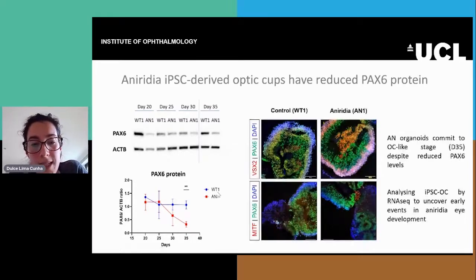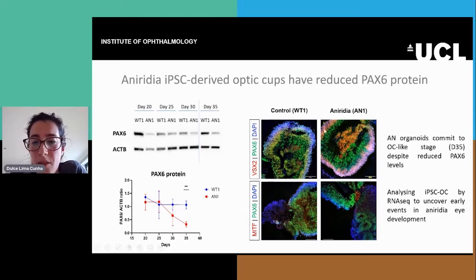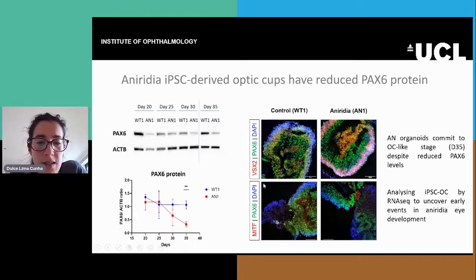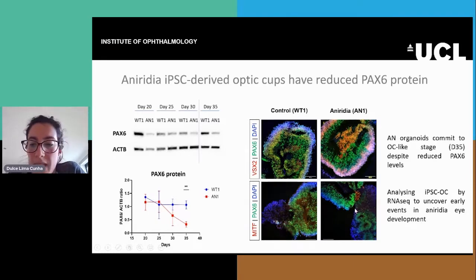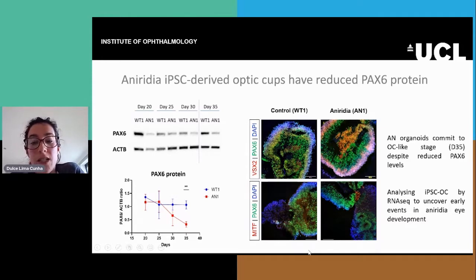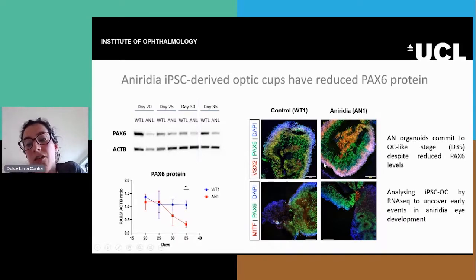Nonetheless, we can see that the cells and the optic cups can still be formed in the aniridia lines. We can see this nice layer that expresses the retinal markers, and we again see some patches of the RPE marker MITF. We are now further analyzing these by RNA-seq and high-throughput genetic techniques to uncover the early events in this development.